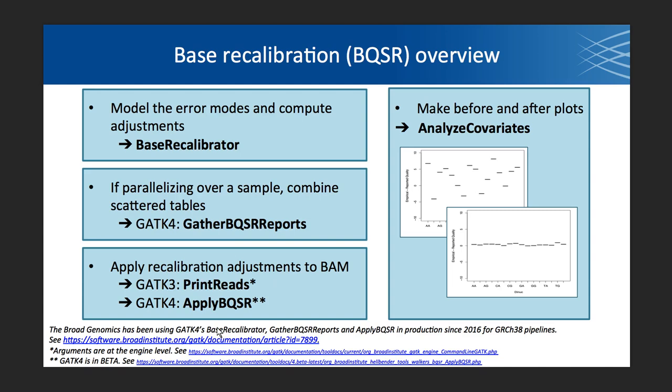We then apply the recalibration adjustments to the reads and the BAM. In GATK3, the tool that does this is PrintReads. In GATK4, the tool that does this is ApplyBQSR. We always recommend that you make the before and after plots of how your recalibration went with the tool called AnalyzeCovariates, which is the same tool in both GATKs.